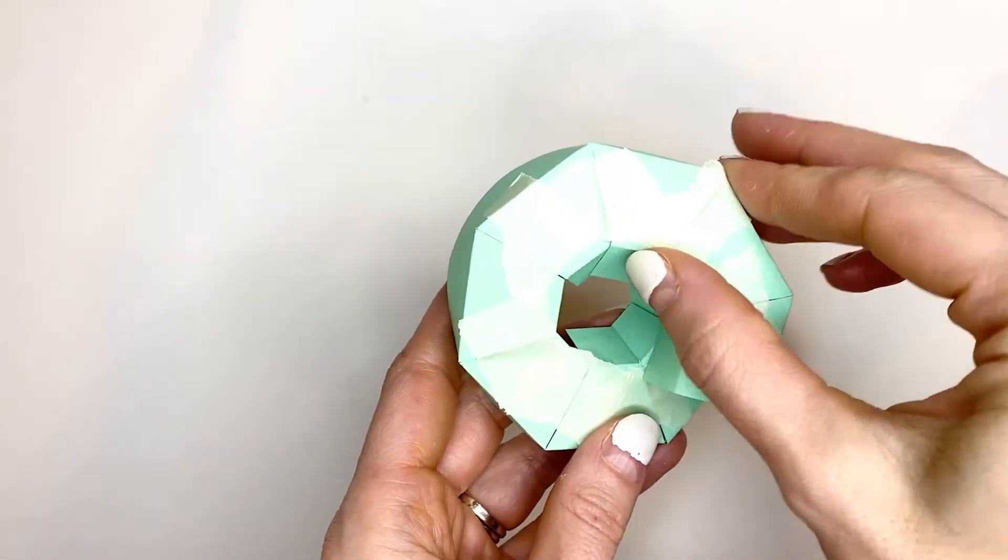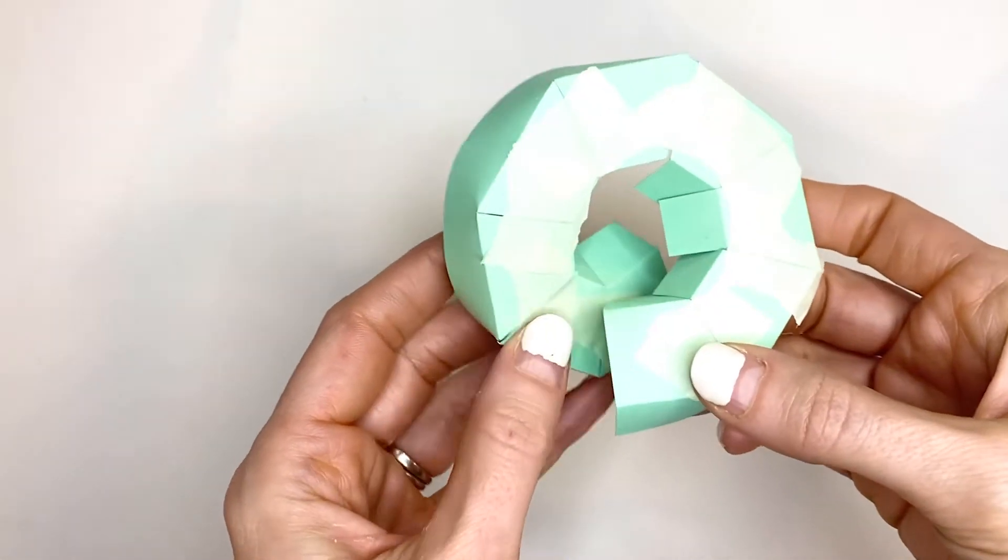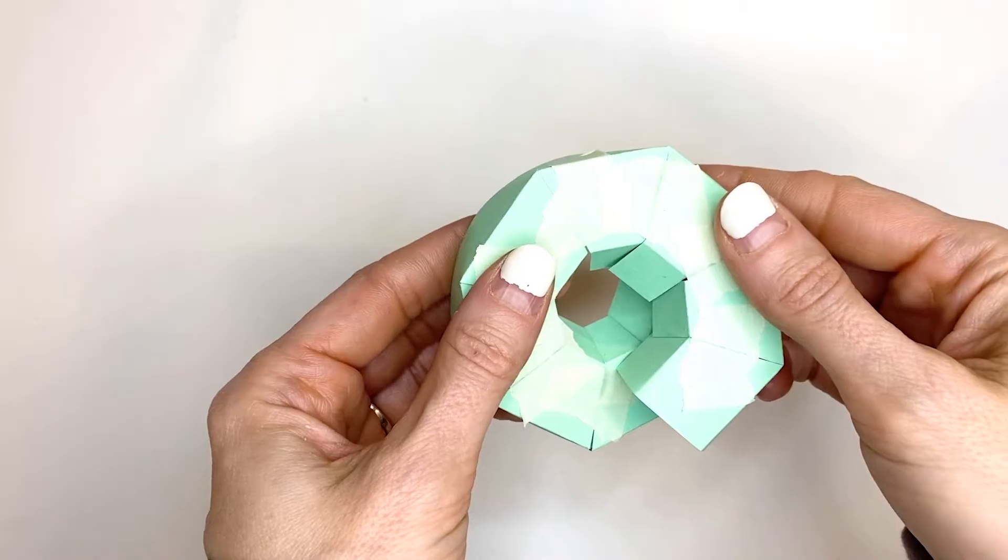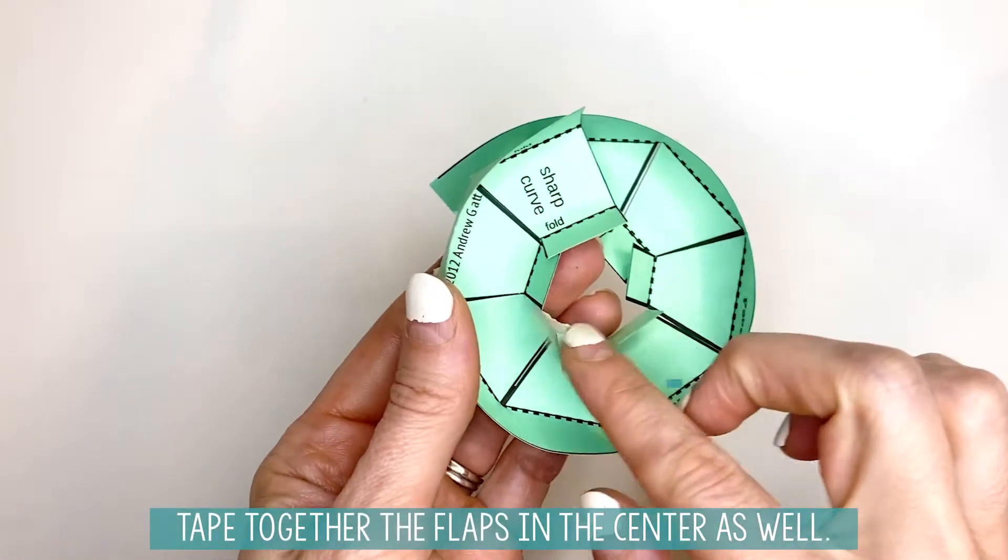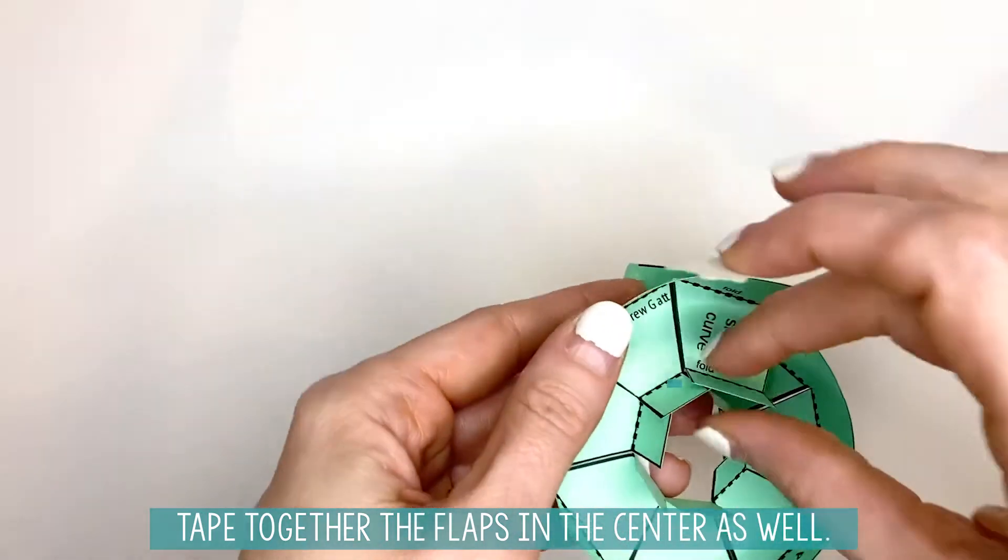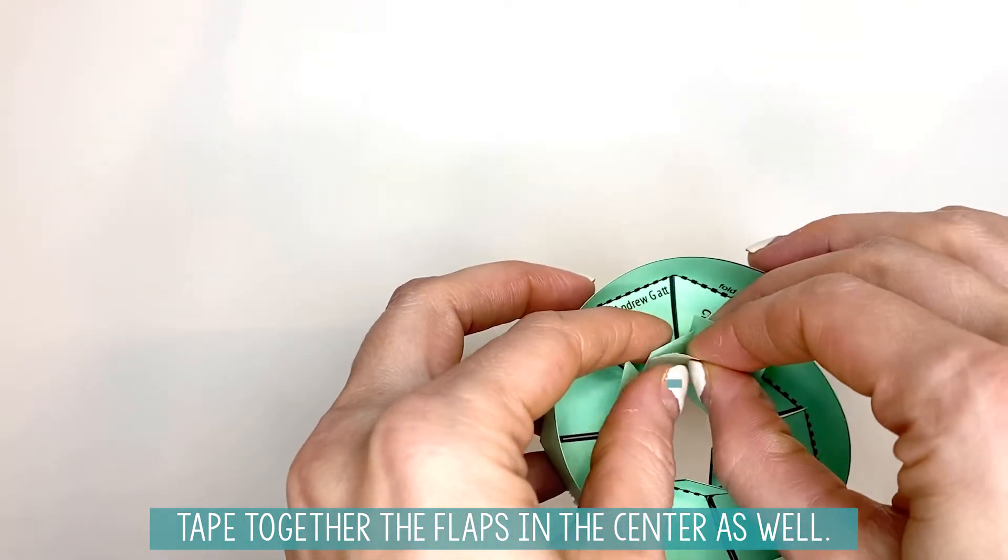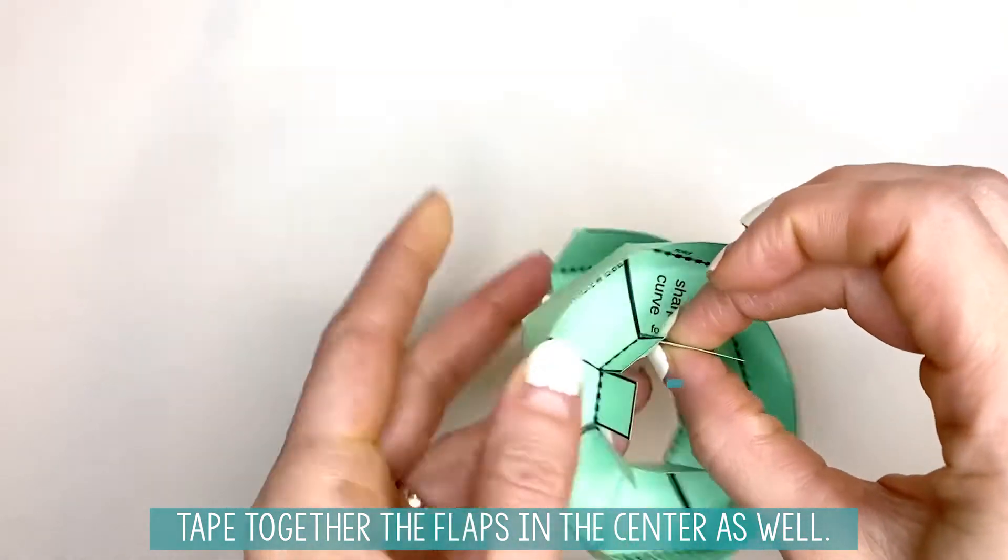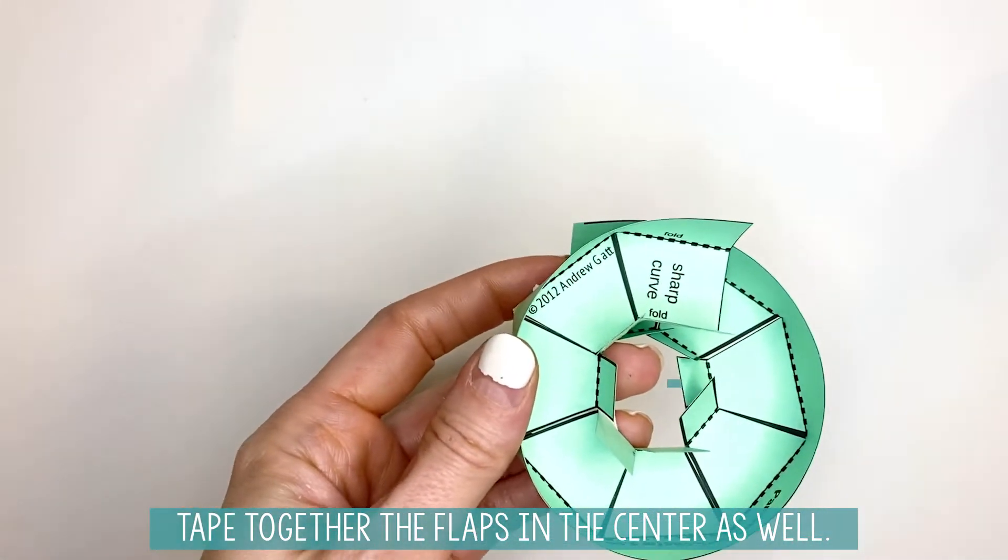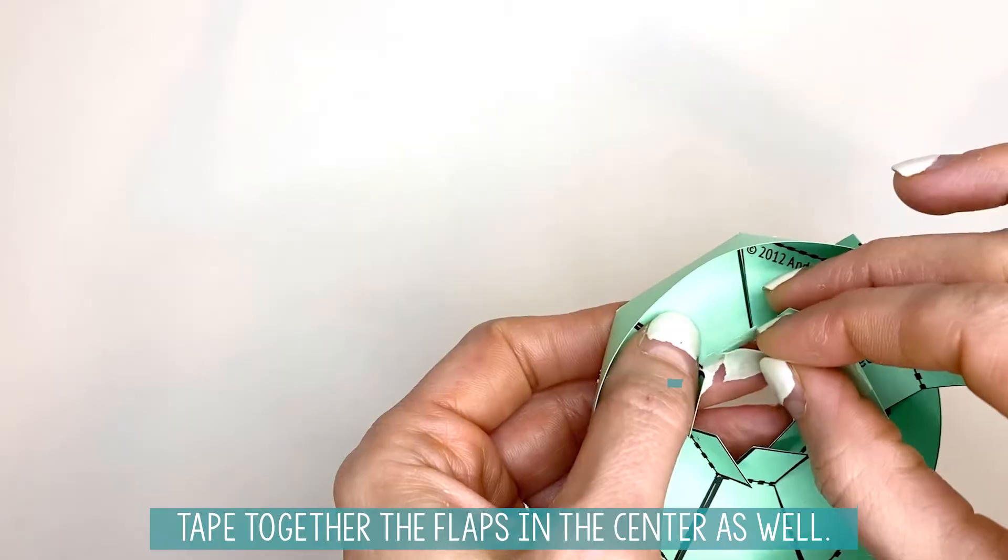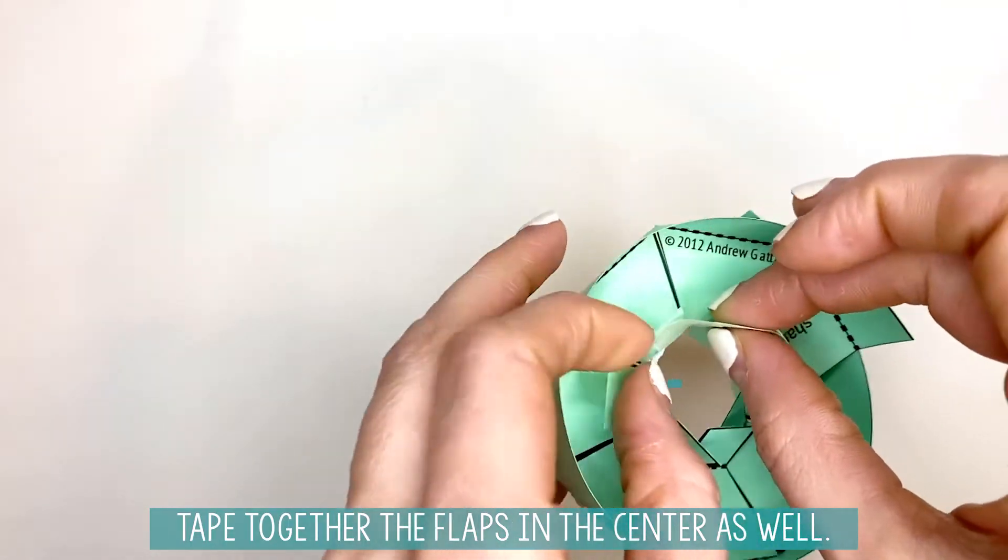When you have the bottom taped, it'll look like this. You've got all of those flaps taped together. Now you're going to flip it around and the last step is you're going to tape all of these flaps together as well. Again, you're going to need very small pieces of tape and you want these to be parallel with these pieces right here. I will just do a couple just so you can get the idea.